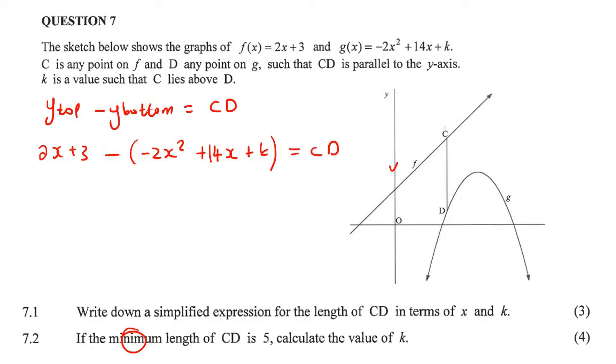Now you just want to go simplify all of that. So that's going to be 2x plus 3 plus 2x squared minus 14x minus k equals to CD. And now we just put all like terms together. So that'll give us 2x squared minus 12x plus 3 minus k. And that is the simplified expression for the length of CD in terms of x and also in terms of k.